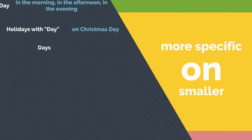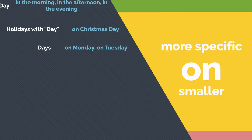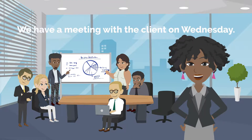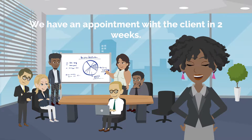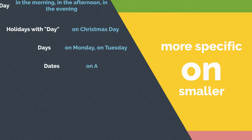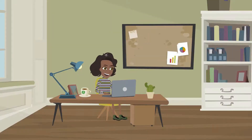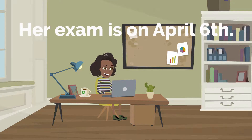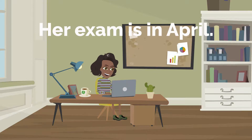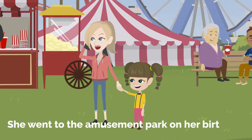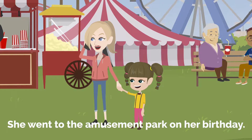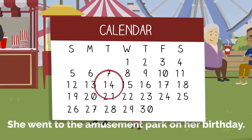On can be used with days, such as on Monday, on Tuesday, etc. For example, we have a meeting with the client on Wednesday. This is more specific than just saying we have an appointment with a client in two weeks. It can be used with dates, such as on April 6th. For example, her exam is on April 6th — this is more specific than just saying her exam is in April. It can be used with specific days, such as on my birthday. For example, she went to the amusement park on her birthday. We don't know the exact day of her birthday; however, in context, we understand that it is a specific day on the calendar.